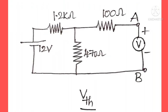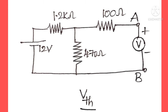As maximum power transfer theorem is the application of Thevenin's theorem, in the first step we will find Vth, which is the Thevenin's voltage across the terminals A and B. Between these terminals the load resistor is connected, so by removing the load resistor we will find the voltage across A and B, which is called the Thevenin's voltage.